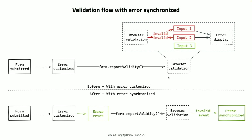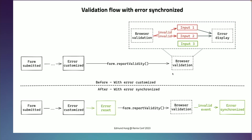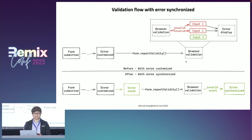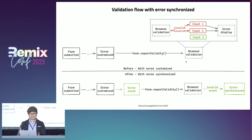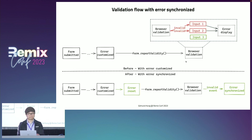The next thing we need to learn about is the invalid event. When browser validation happens, an invalid event will be fired on each invalid input and trigger the error display like the top diagram. This gives us a chance to capture error states and customize how errors should be reported. But there's no valid event available, so we can't detect when an invalid input becomes valid again.